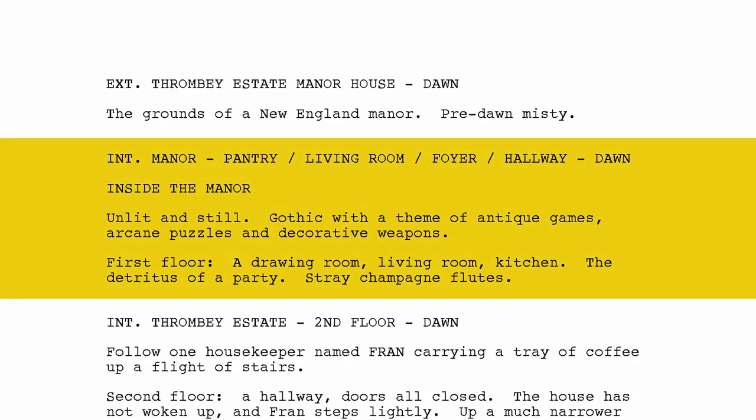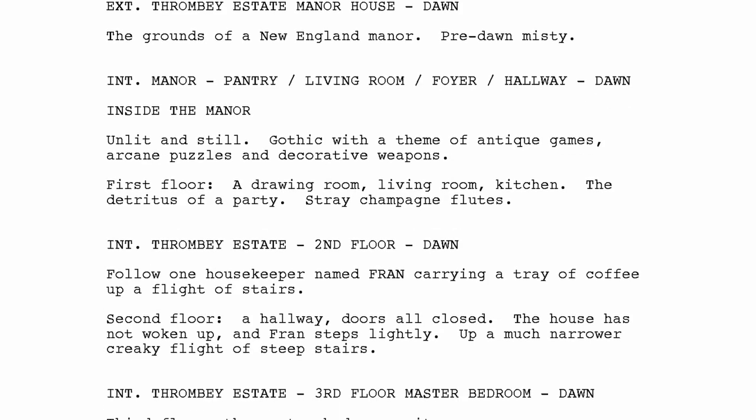Interior. Manor. Pantry. Living room. Foyer. Hallway. Dawn. Inside the Manor — unlit and still. Gothic. With a theme of antique games, arcane puzzles, and decorative weapons. First floor: a drawing room, living room, kitchen. The detritus of a party — stray champagne flutes. Here it's just gathered images. Whether a second unit or small production does this, these are all little pieces put together. The art department is paying very close attention because all of these things are going to have to be made, found, or bought.